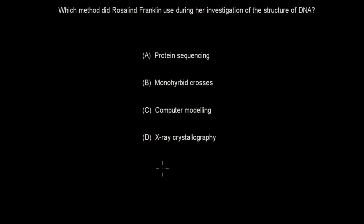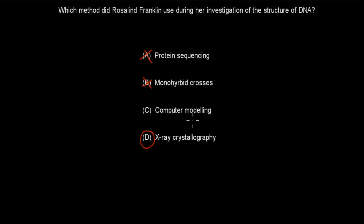Welcome back. The correct answer is D. Protein sequencing was not available when she was working, so A is false. Monohybrid crosses — that was Mendel, not Franklin. Computer modeling — they didn't have computers back then, so that's definitely not it. It was X-ray crystallography. So D is correct.